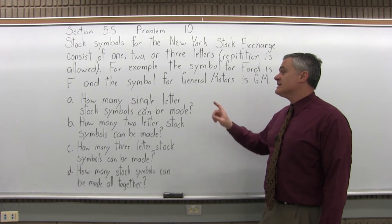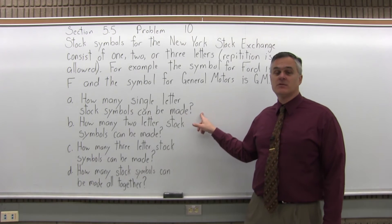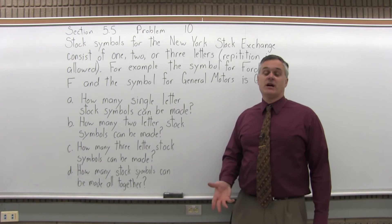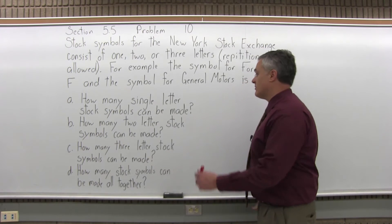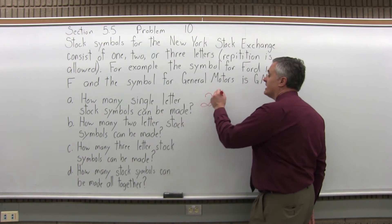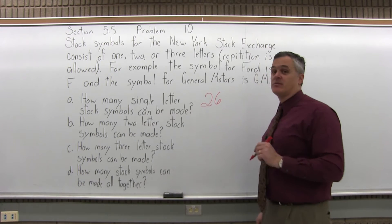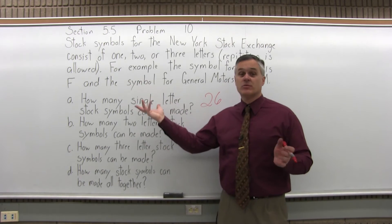So part A says, how many single-letter stock symbols can be made? Well, if it's made from a letter of the alphabet, and there's 26 letters in the alphabet, there are 26 different single-letter stock symbols that you could make. So the F for Ford would be one of those 26.